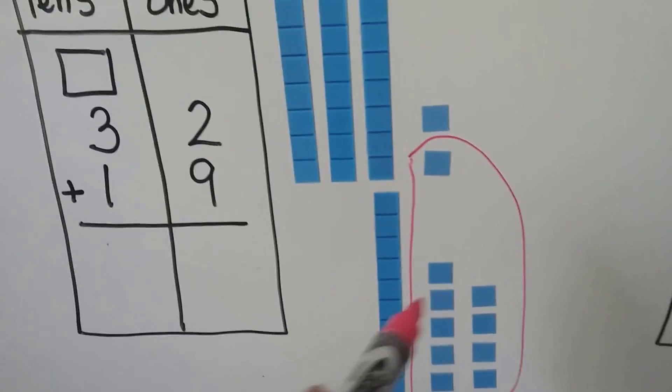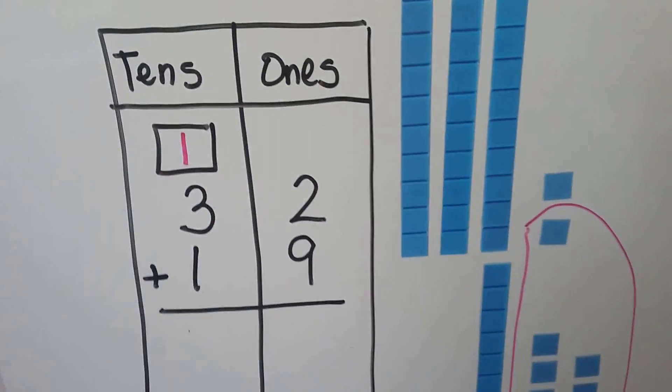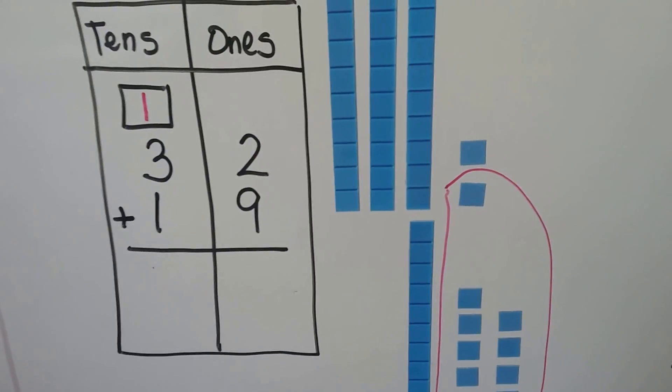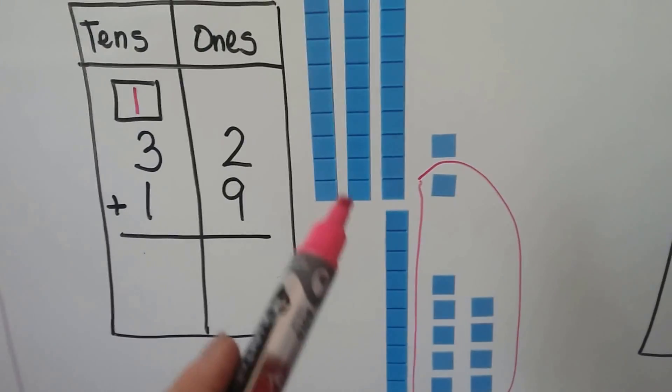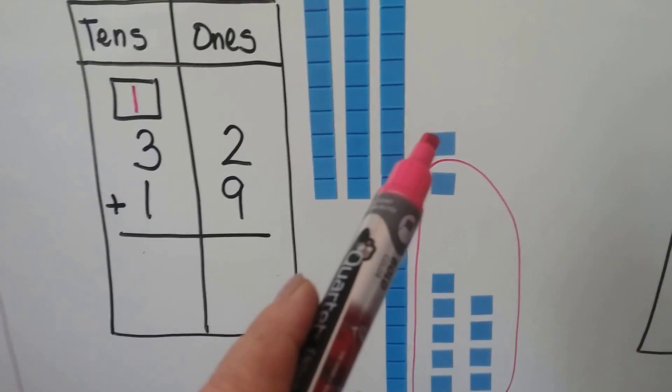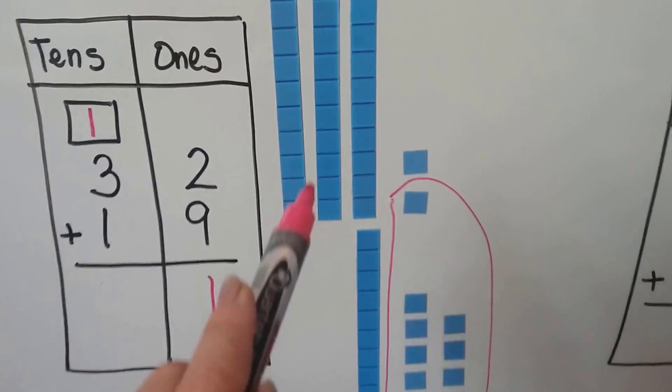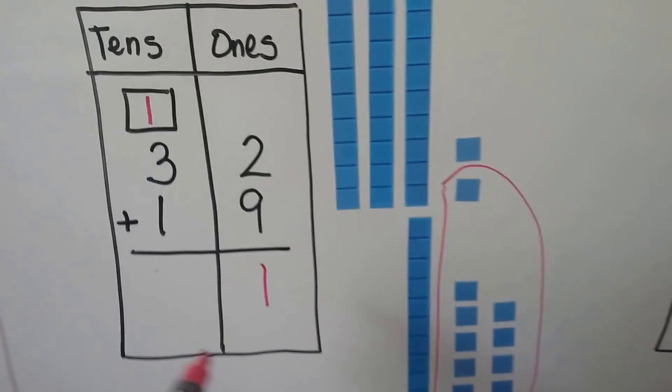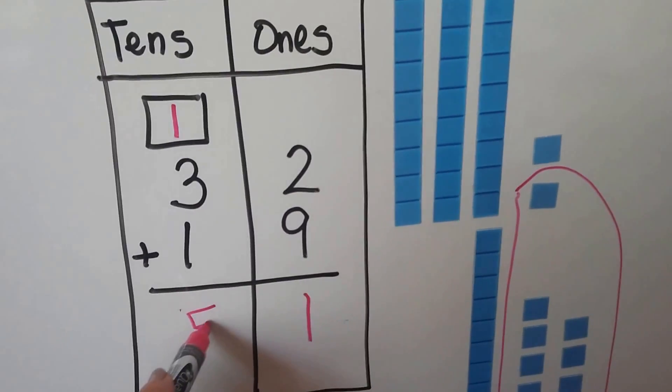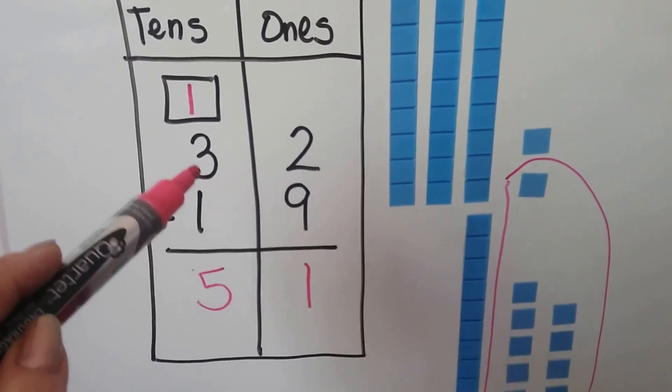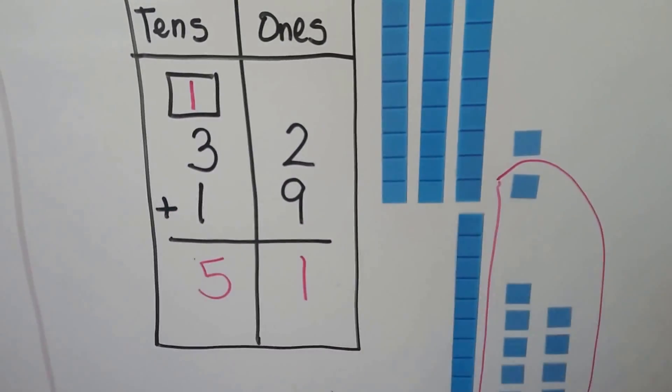Now that we made a 10, we can add it to the tens place, that one 10 we made. We count our ones. There's only 1 left. We count our tens: 1, 2, 3, 4, 5. And 3 plus 1 plus 1 is 5.